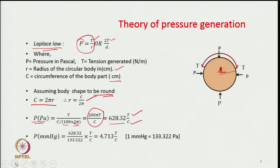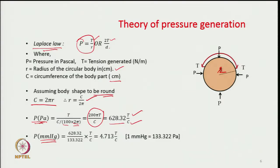To convert Pascal to mmHg, which is the unit mostly reported for pressure garments, we use 1 mmHg = 133.322 Pa. Therefore, dividing by 133.322 gives: pressure in mmHg = 4.713 × T/C, roughly 4.7 × T/C, where T is in Newton per meter and C is in centimeters.